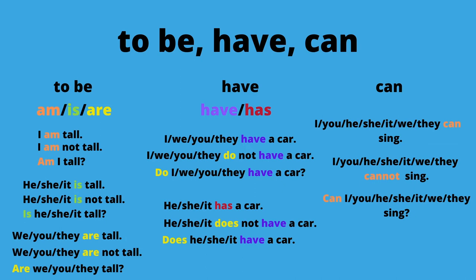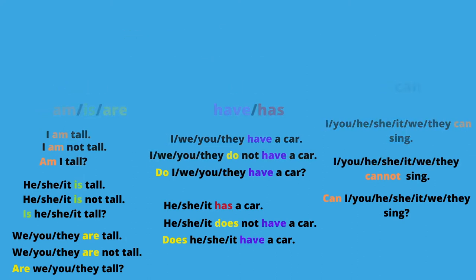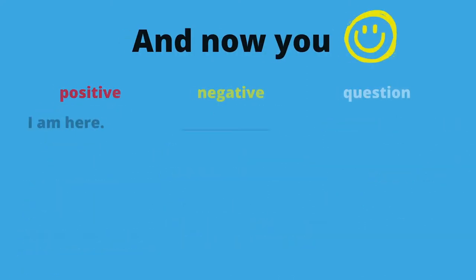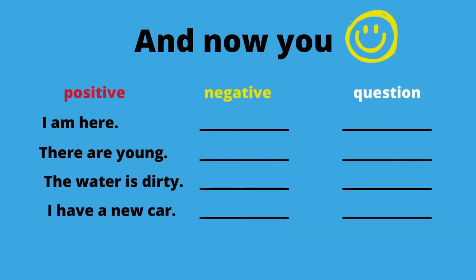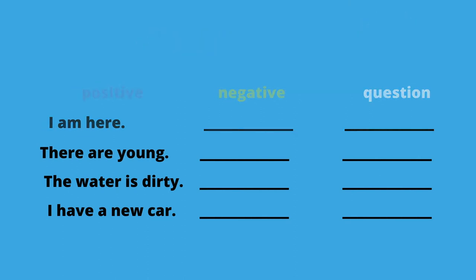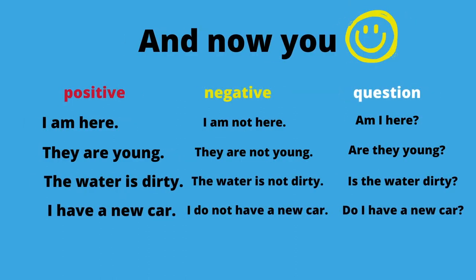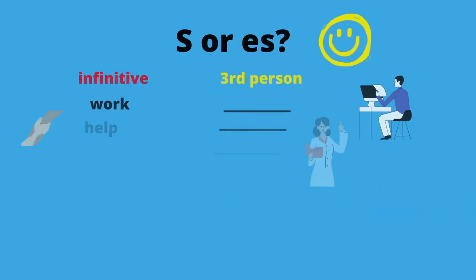This was a quick one. Let's see what you remember — turn the sentences into negatives and questions. 'I am here.' 'They are young.' 'The water is dirty.' 'I have a new car.' Feel free to pause the video and fill in the blanks. Answers: 'I am not here' / 'Am I here?' — 'They are not young' / 'Are they young?' — 'The water is not dirty' / 'Is the water dirty?' — 'I do not have a new car' / 'Do I have a new car?'